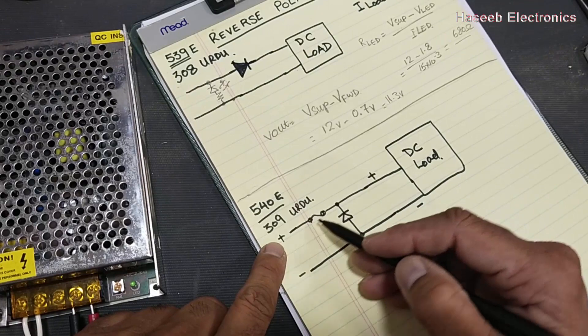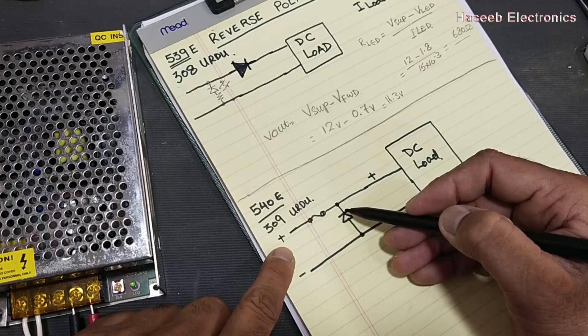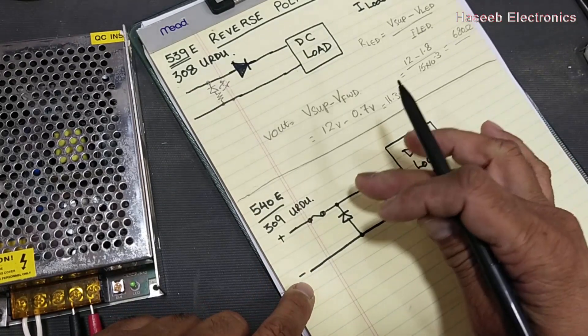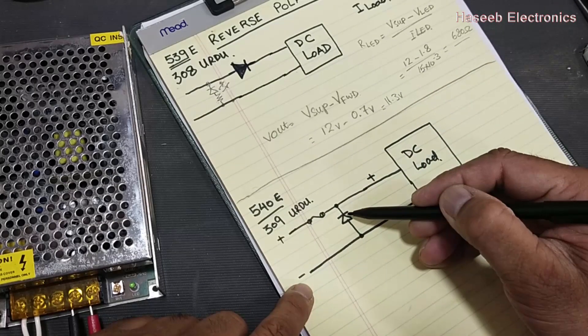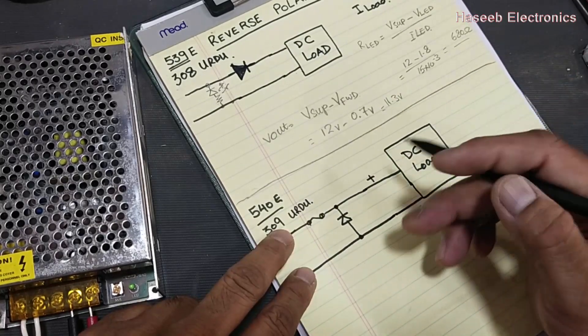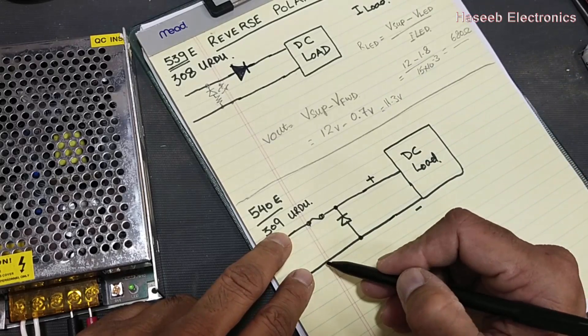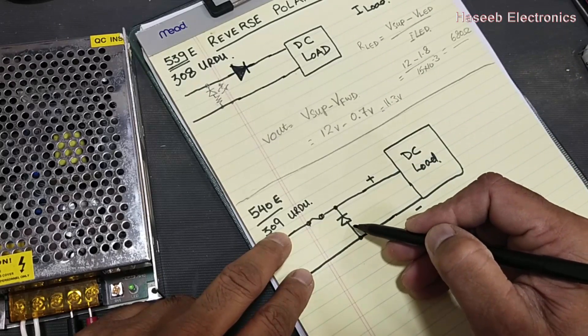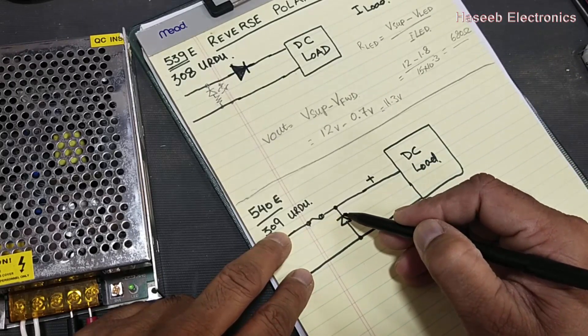For protection of reverse polarity, a reverse bias diode will be used here in parallel line. Now the positive voltage is applied to the cathode, negative to anode. The load is working and this diode is reverse biased.